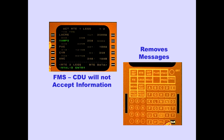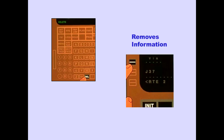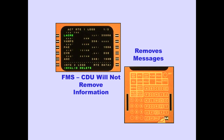The FMS-CDU message 'invalid entry' is displayed in the scratchpad when the FMS-CDU will not accept the line-selected information from the scratchpad. Pushing the clear key removes the message. Pushing the delete key enters DELETE into the scratchpad. The FMS-CDU message 'invalid delete' is displayed in the scratchpad when the FMS-CDU will not remove the line-selected information. Pushing the clear key removes the message.